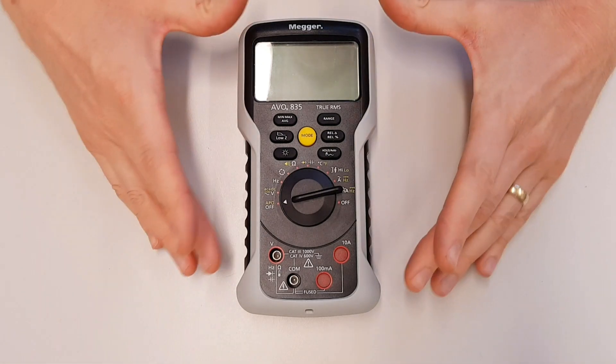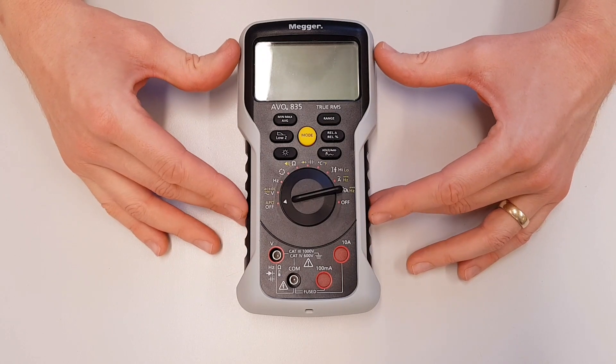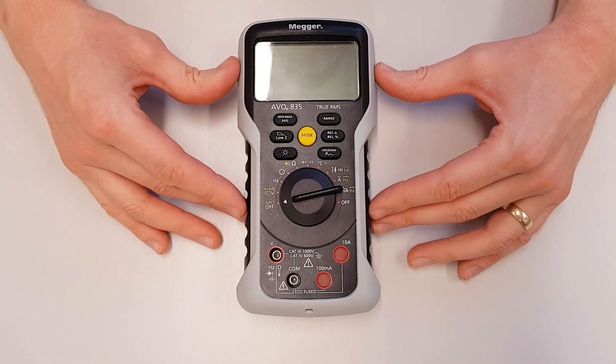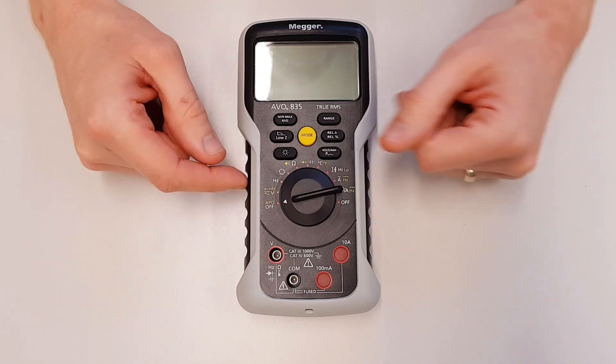So the first thing we need to consider is how to set up our multimeter. We're using the Megger Evo 835, this lovely meter that Megger gave to us, and we're going to see how to set this up to measure resistance.